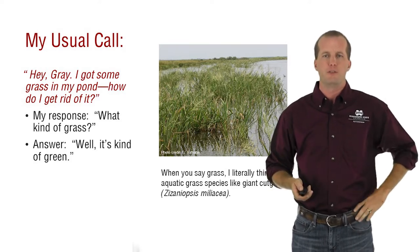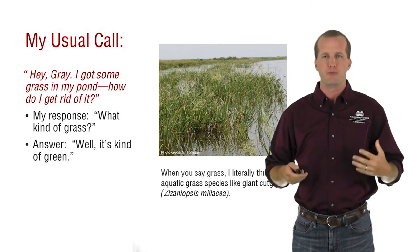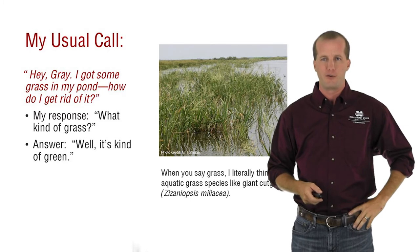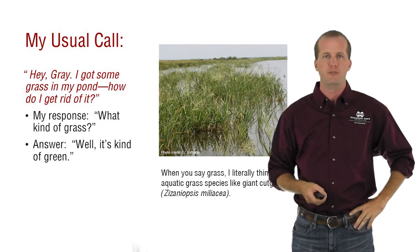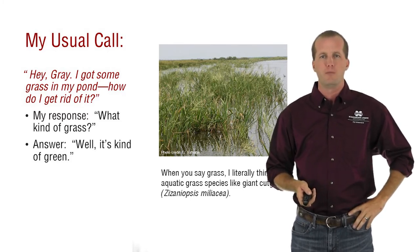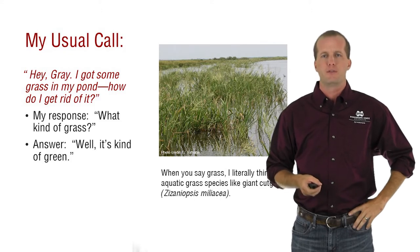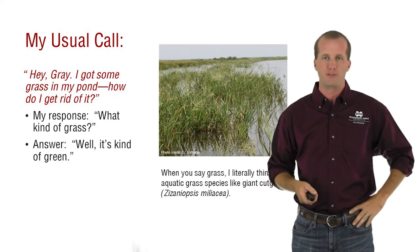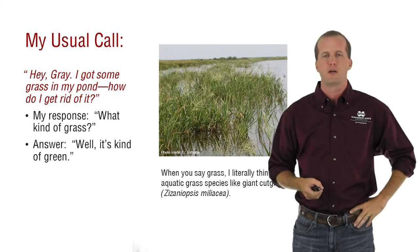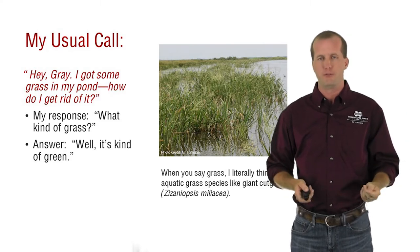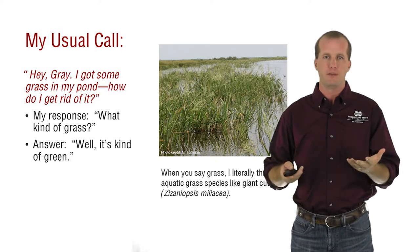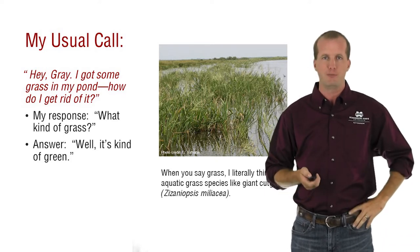The ID of the plant species matters. When someone tells me they have a grass species, I literally start thinking about an aquatic grass species — the image you see here to the right. The species is Zaniopsis miliaceae, or giant cut grass. That is a grass species that requires a lot of water to survive. It's not like the typical grass that you see in your yard or in a pasture setting. So when someone tells me they have grass in their pond, that's what I immediately think of as a grass species.